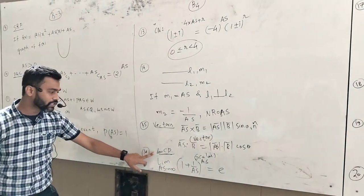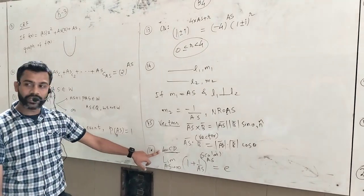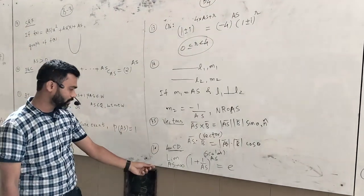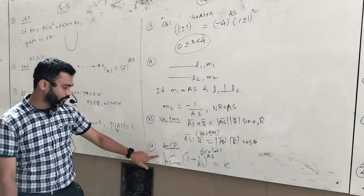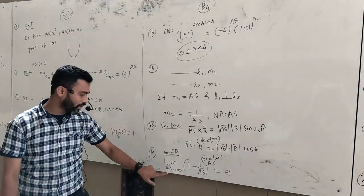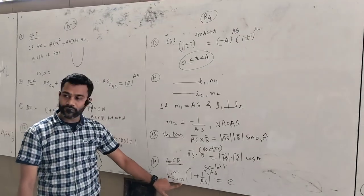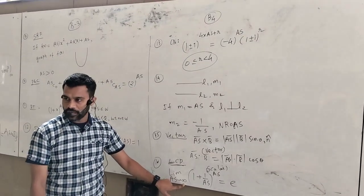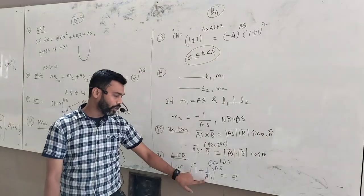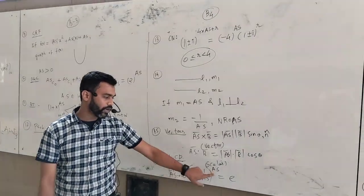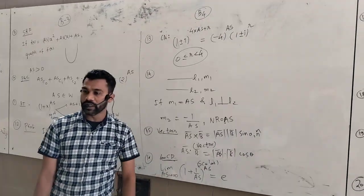LCD — limit, continuity, differentiability. One more shortcut: limit as Anisar tends to infinity of (1 + 1/Anisar) to the power Anisar is equal to e.